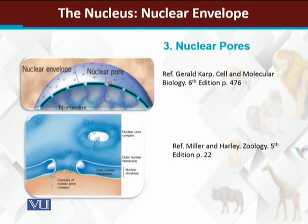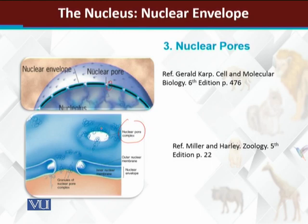If you look carefully at the structure of the nuclear pore, you can see different types of material on it — these are basically the proteins that form the nuclear pore. Some of the proteins that make up the nuclear pore are globular proteins, and some of them are filamentous — meaning they form long, thread-like structures. Globular and filamentous proteins together form the structure of the nuclear pore. The nuclear pore is a very complex structure, which is why instead of simply calling it a nuclear pore, we call it the nuclear pore complex.